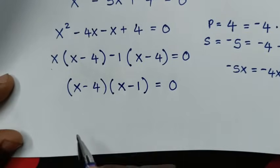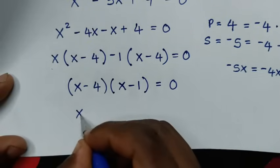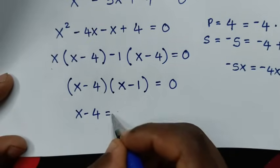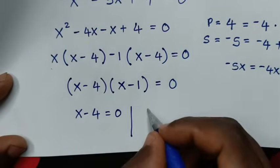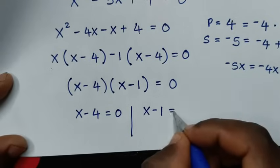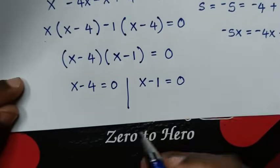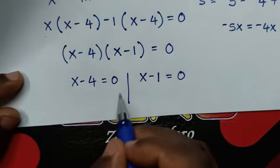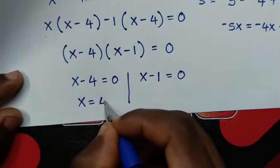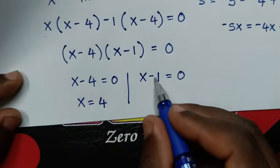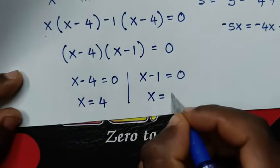We have two solutions: the first is x minus 4 equals 0, and the second is x minus 1 equals 0. Taking negative 4 to the right side gives x is equal to 4, and taking negative 1 to the right side gives x is equal to 1.